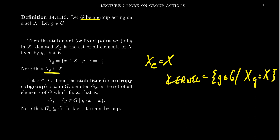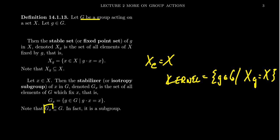X sub g is a subset of X — these are all the elements which are fixed by g. Now G sub x is a subset of G, and this is the collection of all elements g that fix x. In both cases, the subscript is the element doing the fixing, and the large set — X or G — is the set that the result lives in. So X sub g gives all things inside X fixed by g, and G sub x gives all elements of G that fix x. The notation tells you which subset we're talking about.